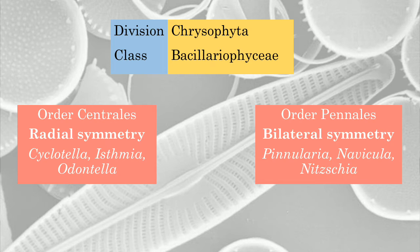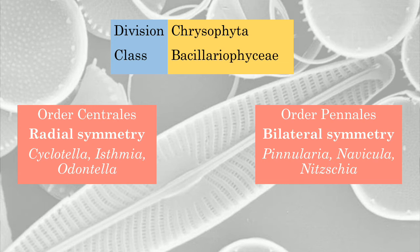The two orders are based on certain characteristics. One of the primary characteristics that divides these two orders is symmetry, and the second is their occurrence — where these organisms are found. The order Centrales and order Pennales are the two orders under class Bacillariophyceae. Centrales has radial symmetry, as the name suggests, whereas Pennales shows bilateral symmetry — the organism is similar on two sides of an axis.